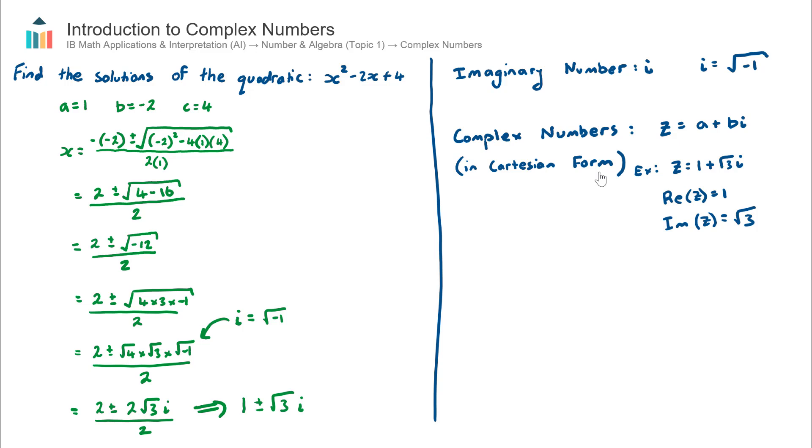If you have a sound understanding of coordinate geometry - so how to plot coordinates on an x-y axis - it's about that's about all it is to it, except we're no longer going to have an x-y axis, we're actually going to have a real and an imaginary axis.